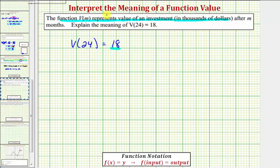Next, notice how the input is m, where m represents the number of months. And for V of 24 equals 18, notice that 24 is the input, which again represents the number of months.